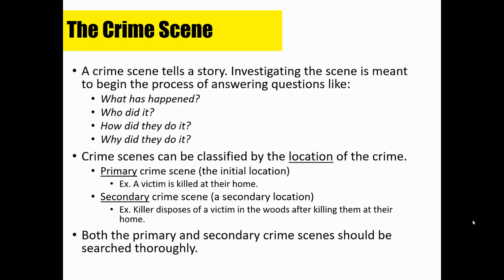Crime scenes can be classified by their location. You can have primary crime scenes, secondary crime scenes, and even tertiary crime scenes. A primary crime scene is the initial location of the crime — for example, a victim is killed at their home, so the home is the primary crime scene. If the killer disposes of the victim in the woods after killing them at home, then we have a secondary crime scene. The wooded area would be the secondary crime scene.